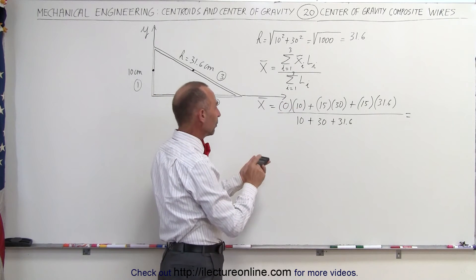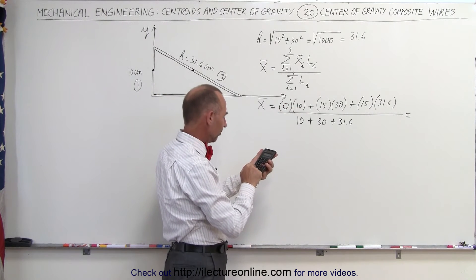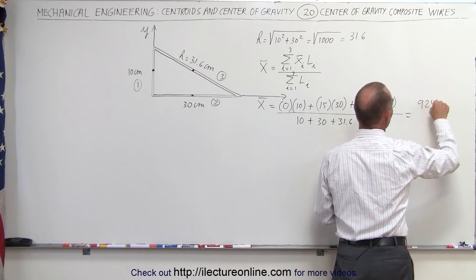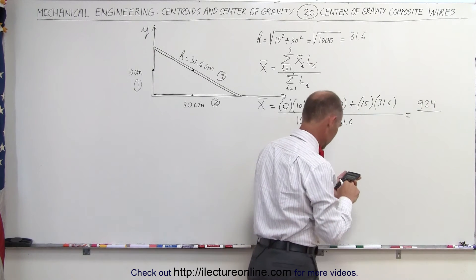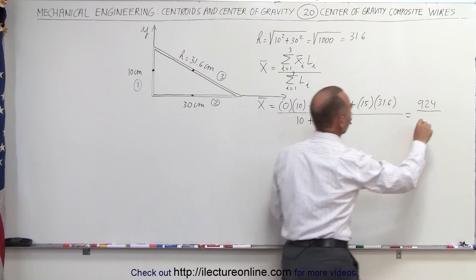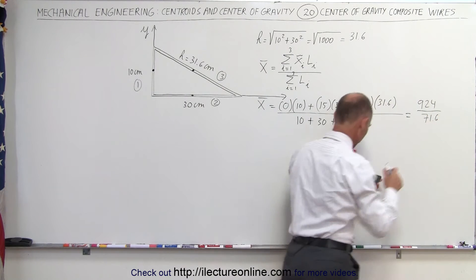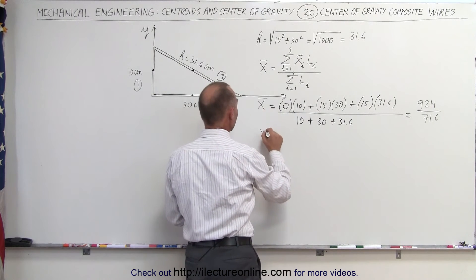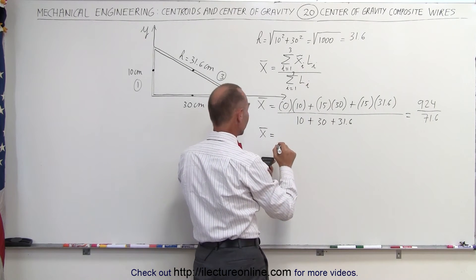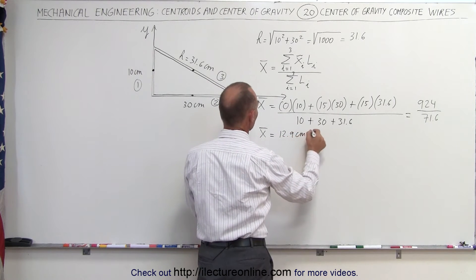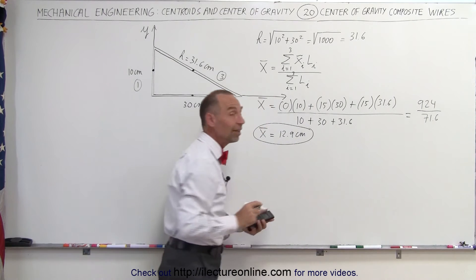Calculating the numerator: zero times 10 is zero, plus 15 times 30 is 450, plus 15 times 31.6 gives 474, for a total numerator of 924. The denominator is 71.6. Dividing gives us an x-coordinate for the center of mass of 12.9 centimeters.